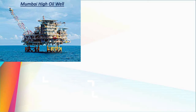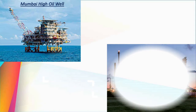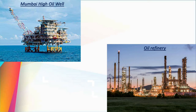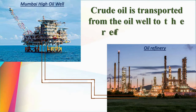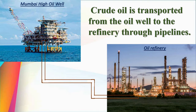For example, Mumbai High is an oil well in the Arabian Sea. Here we get crude oil — impure oil — which must be refined before use. To transport this crude oil to the oil refinery, pipelines are used. The crude oil is transported by pipeline to the oil refinery where it is refined and then distributed to other parts of the city.